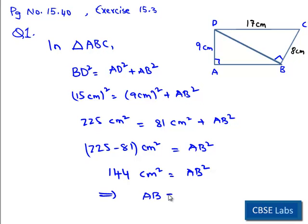We get AB is equal to 12 centimeters. Therefore, we get the dimensions: AB is 12 centimeters and BD is 15 centimeters.